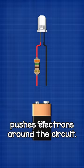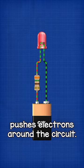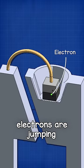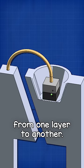A battery pushes electrons around the circuit. And inside the semiconductor, the electrons are jumping from one layer to another.